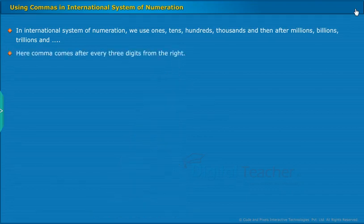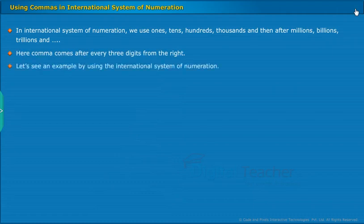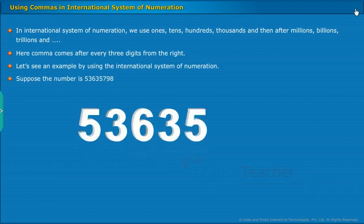Here, comma comes after every three digits from the right. Let's see an example by using the international system of numeration. Suppose the number is five, three, six, three, five, seven, nine, eight.